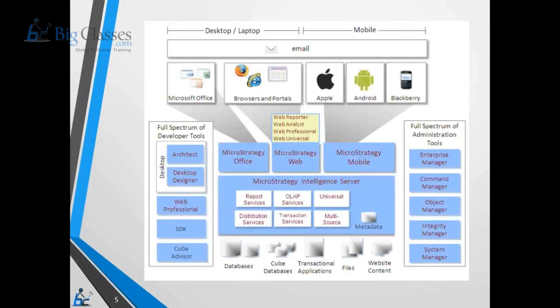From the MicroStrategy architecture perspective, this is a very high-level diagram showing what kind of data you can access. You can have your databases, cube databases, transactional applications, flat files, and website content. MicroStrategy doesn't always have to fetch data from a database — you can access transactional applications, flat files, or even website content through web services. MicroStrategy can fetch data from anywhere.